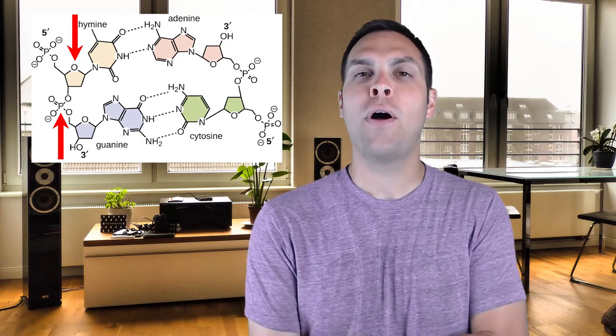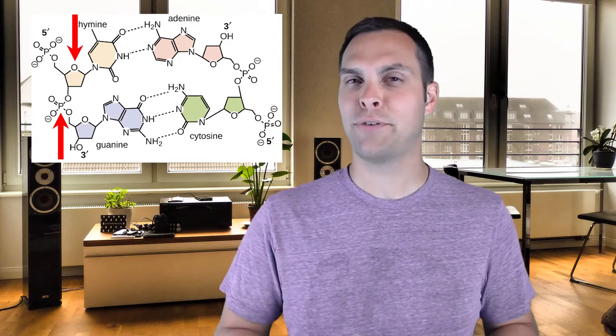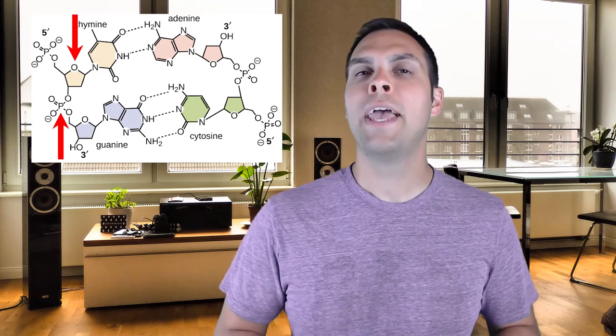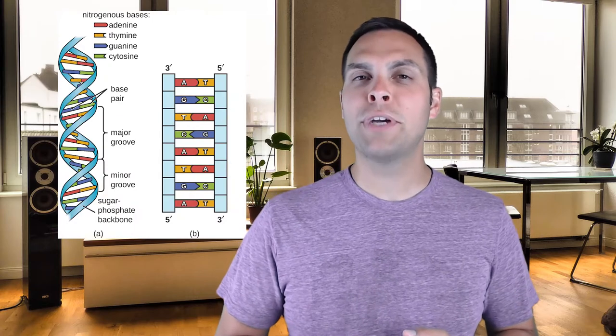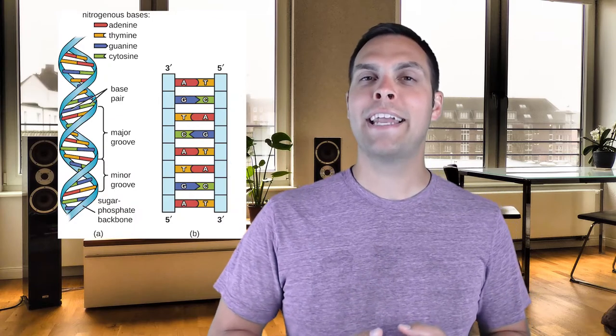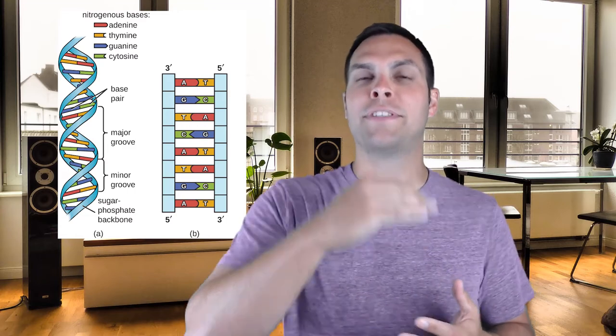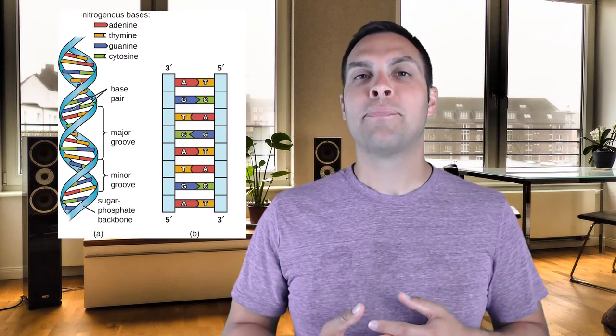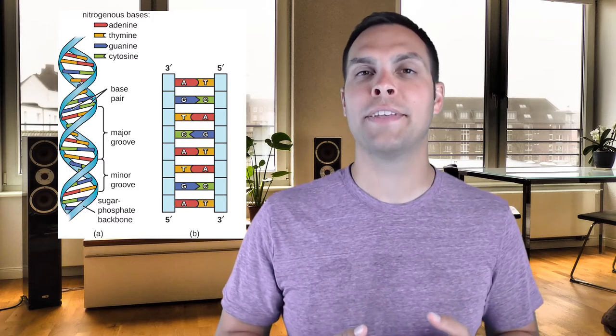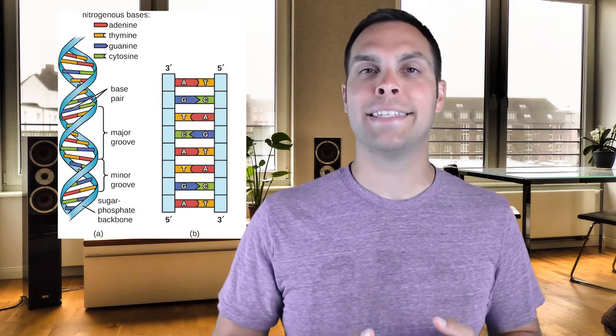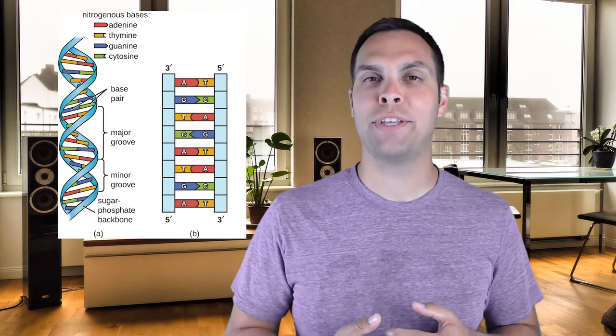Now, what's interesting is in all living things, and I stress all living things, which means I'm excluding viruses, in all living things, DNA is double-stranded. That means when you look at a DNA molecule, it's not a single strand of nucleotide monomers attached to form the nucleic acid. It's actually two strands. The reason for this is that those bases on the other end are able to hydrogen bond with each other.